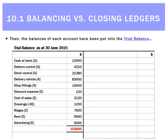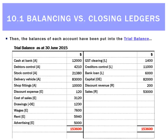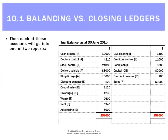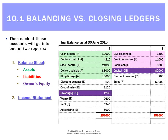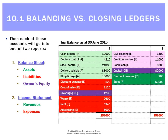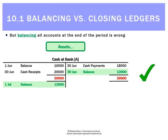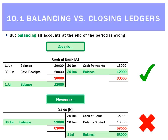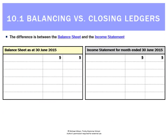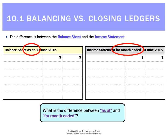We've been getting these really big trial balances like the one on the screen. You can see it's got every type of account in it — some assets, some expenses, owner's equity accounts, some liabilities, and some revenues. What we've been doing is using this info to make a balance sheet by taking the assets, liabilities, and owner's equity accounts, and then making an income statement by taking the revenues and expenses. However, balancing all accounts at the end of the period is actually wrong. For an asset, that's the correct thing to do. But looking at a revenue account, for example — that's wrong. We're actually not going to balance that ledger anymore, and the reason why comes back to the 'as at' and 'for the month ended' concept.